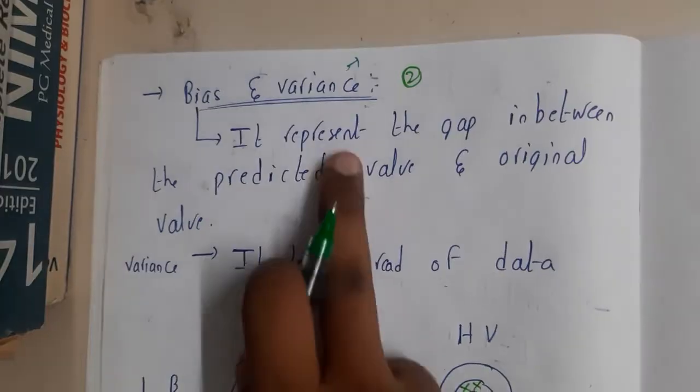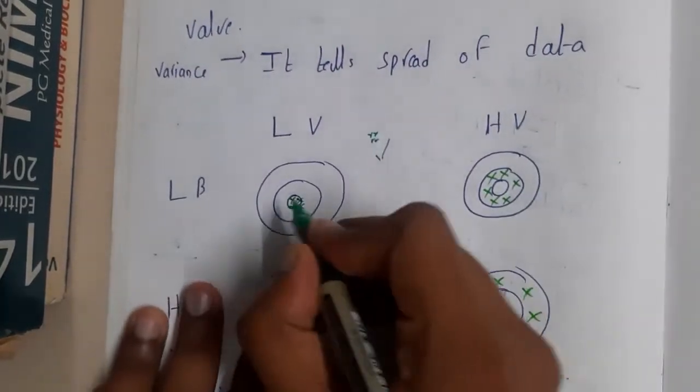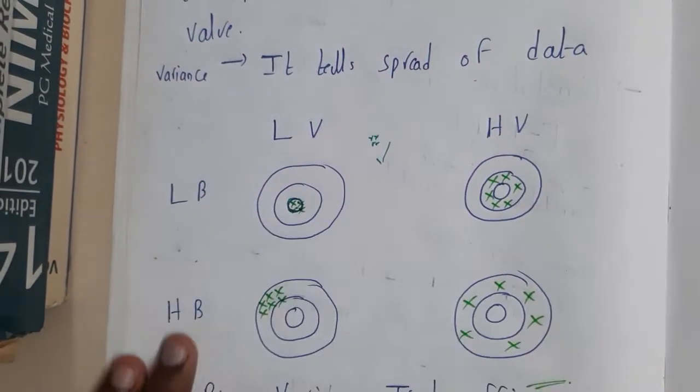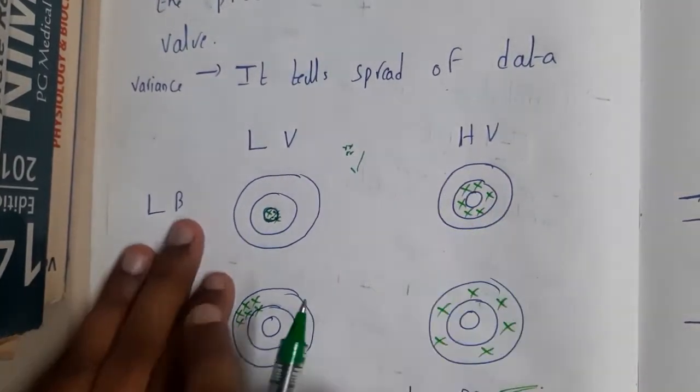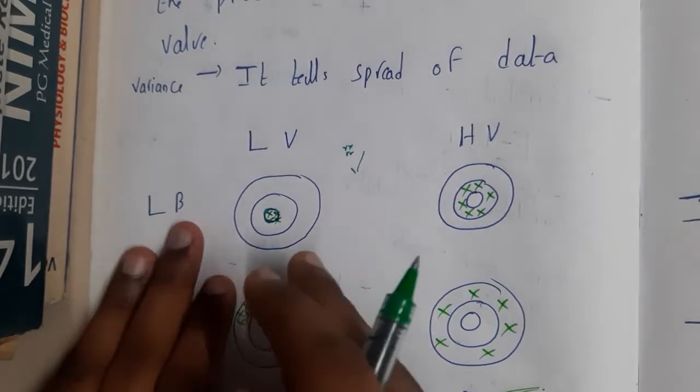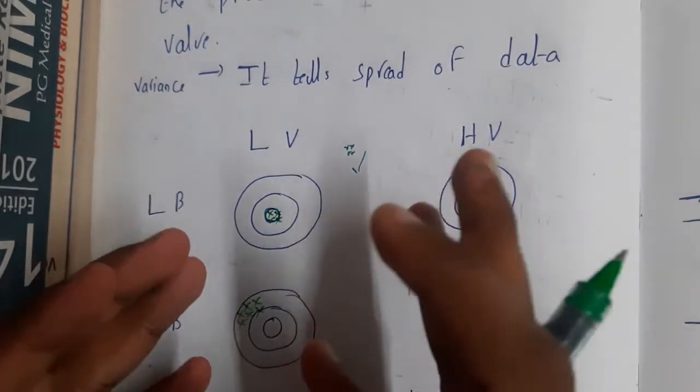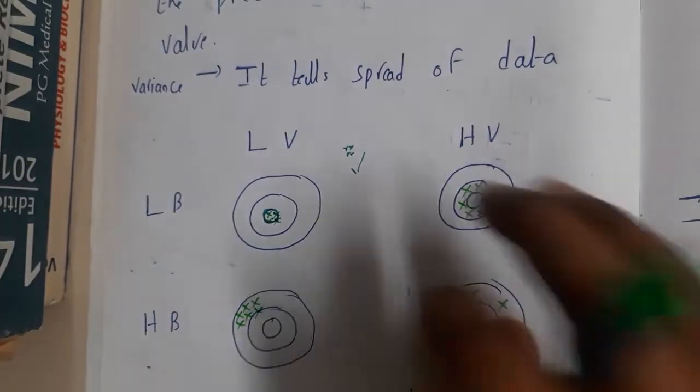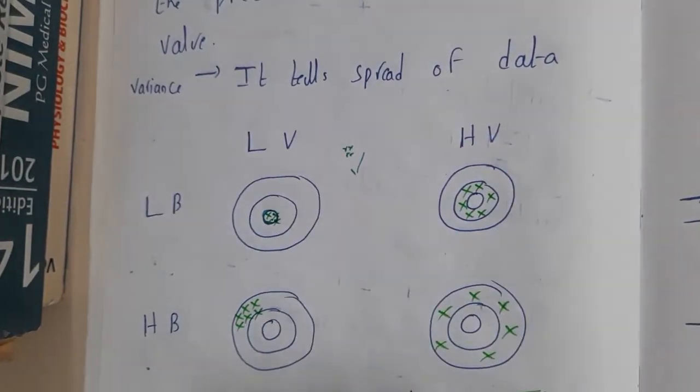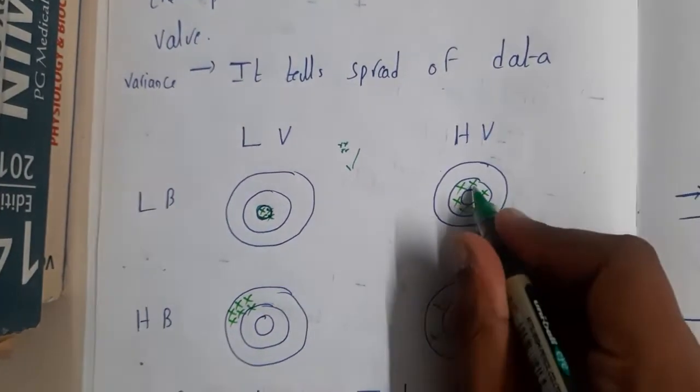If your bias is low but you have high variance, the values will be closer but not exact, so they're in the second layer. When variance is high, the distance between these items or points will be far apart.